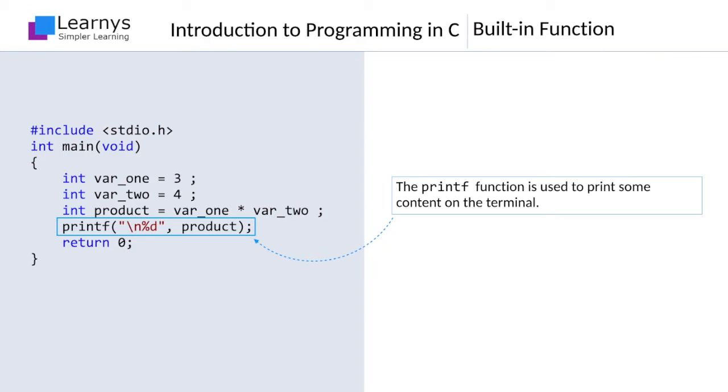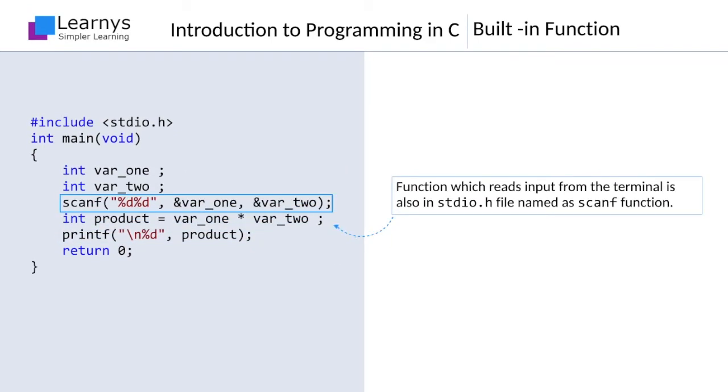Let us try to generalize this function by making it accept two numbers from the user. Luckily, the function which reads input from the terminal is also housed in the stdio.h file, and its name is scanf function. This is the modified version of our program which accepts two numbers from the user and multiplies them. Very shortly, we will look into the details of the functioning of the scanf function. For now, just assume that it will read and assign the two numbers input by the user into var_one and var_two.